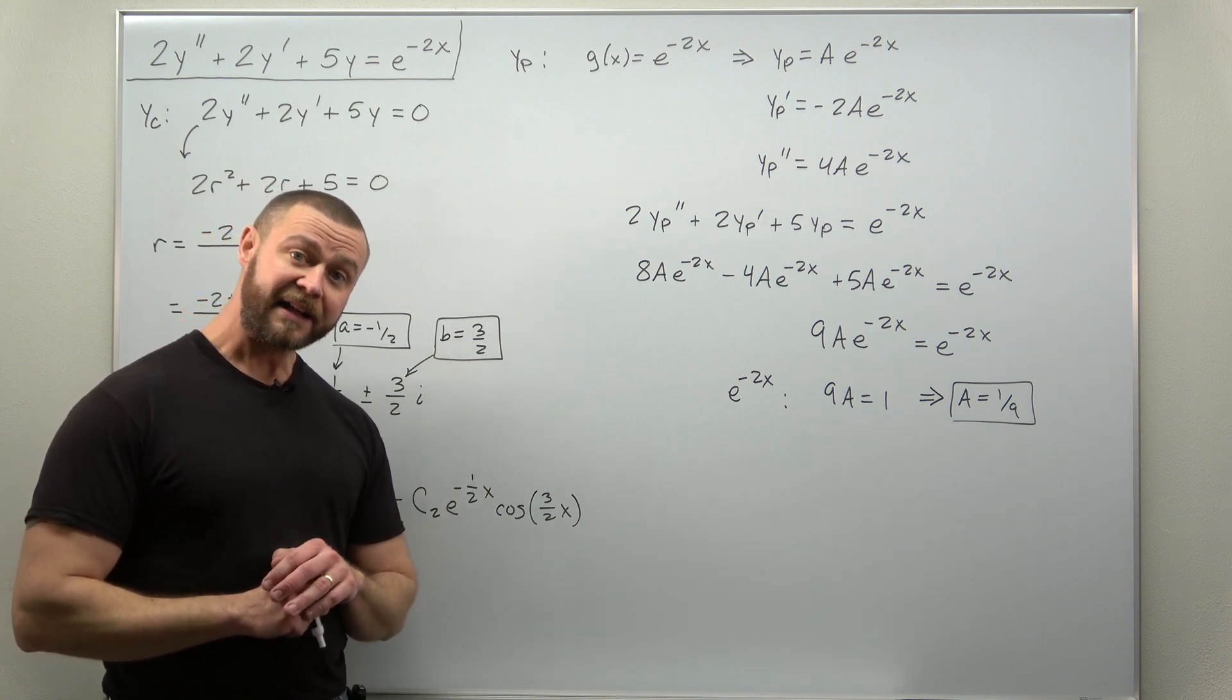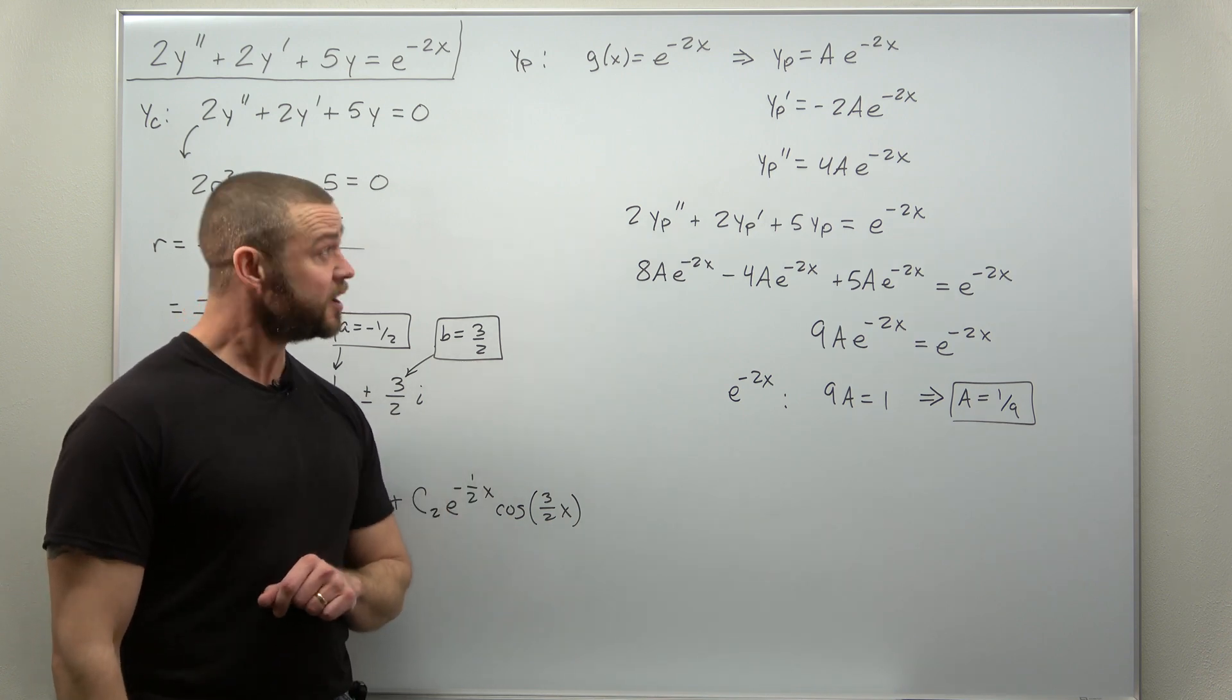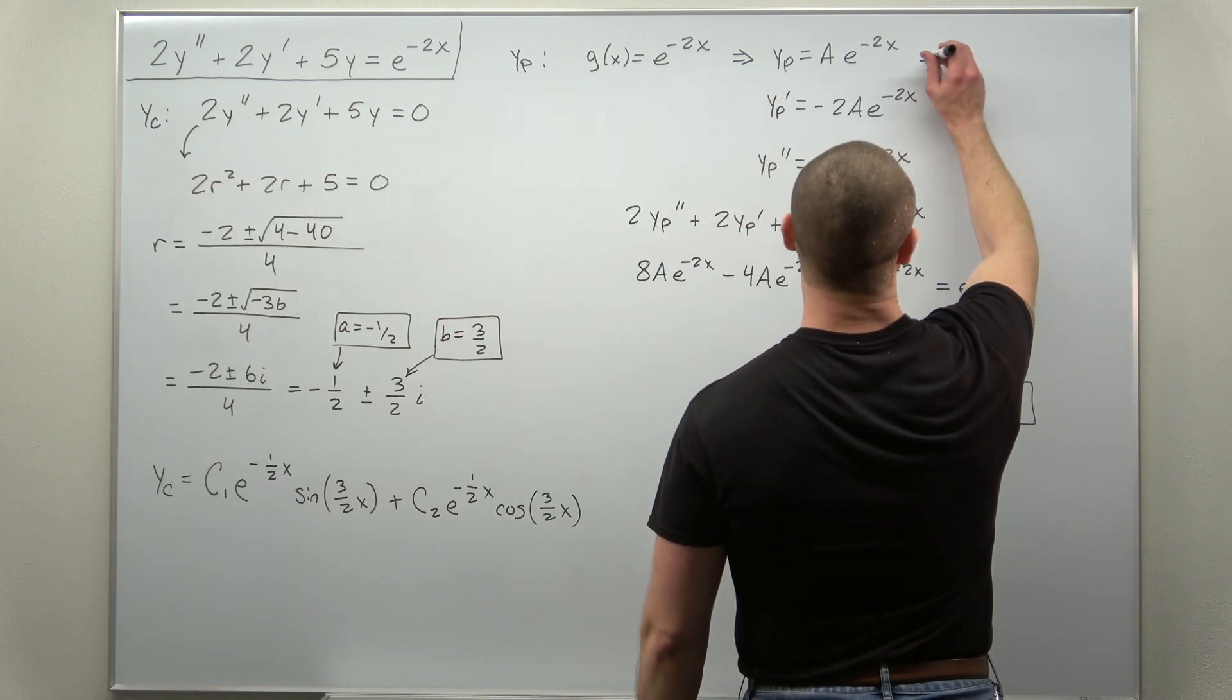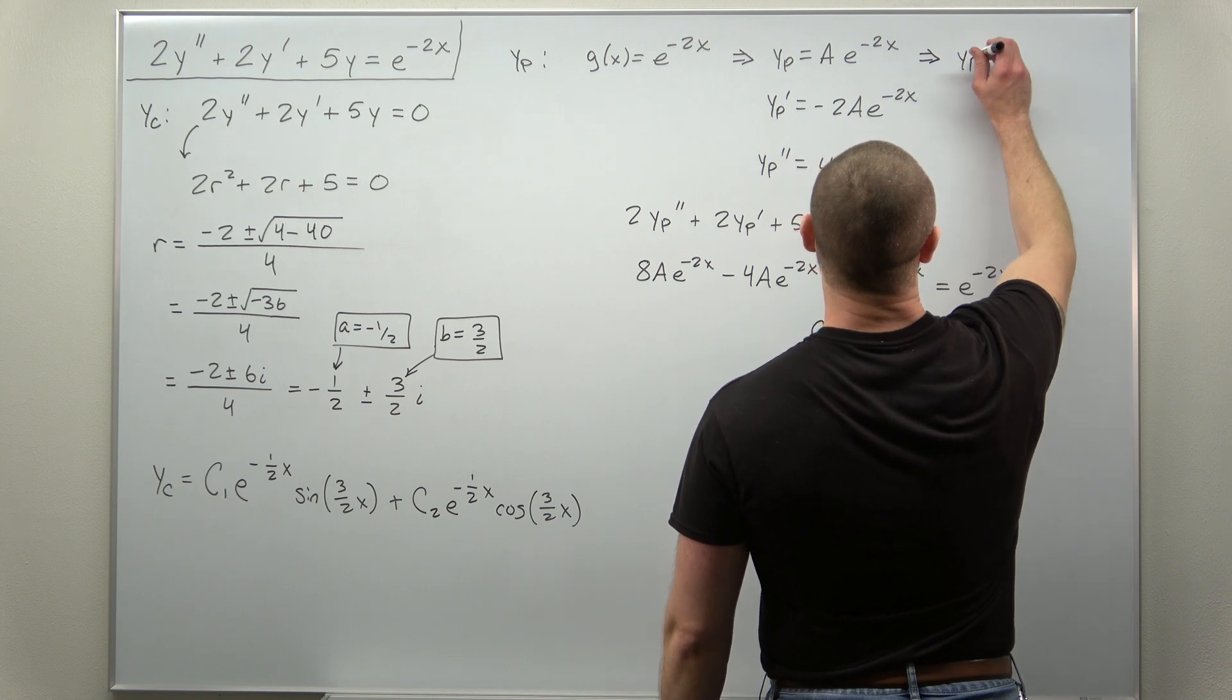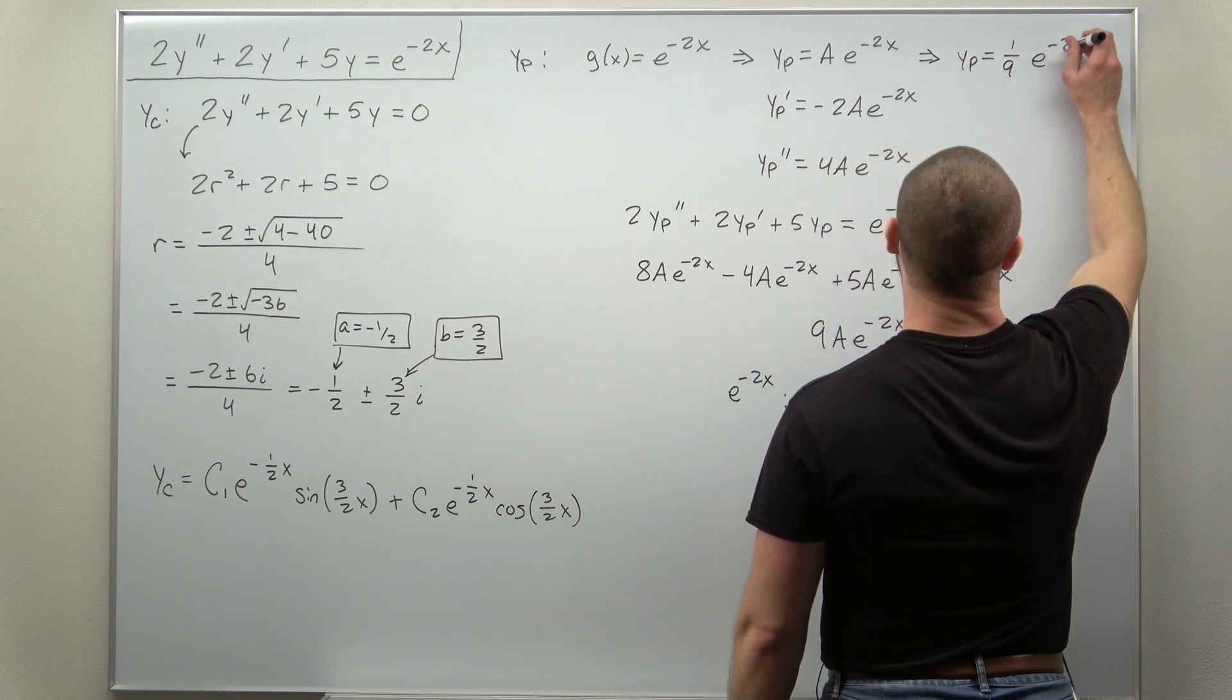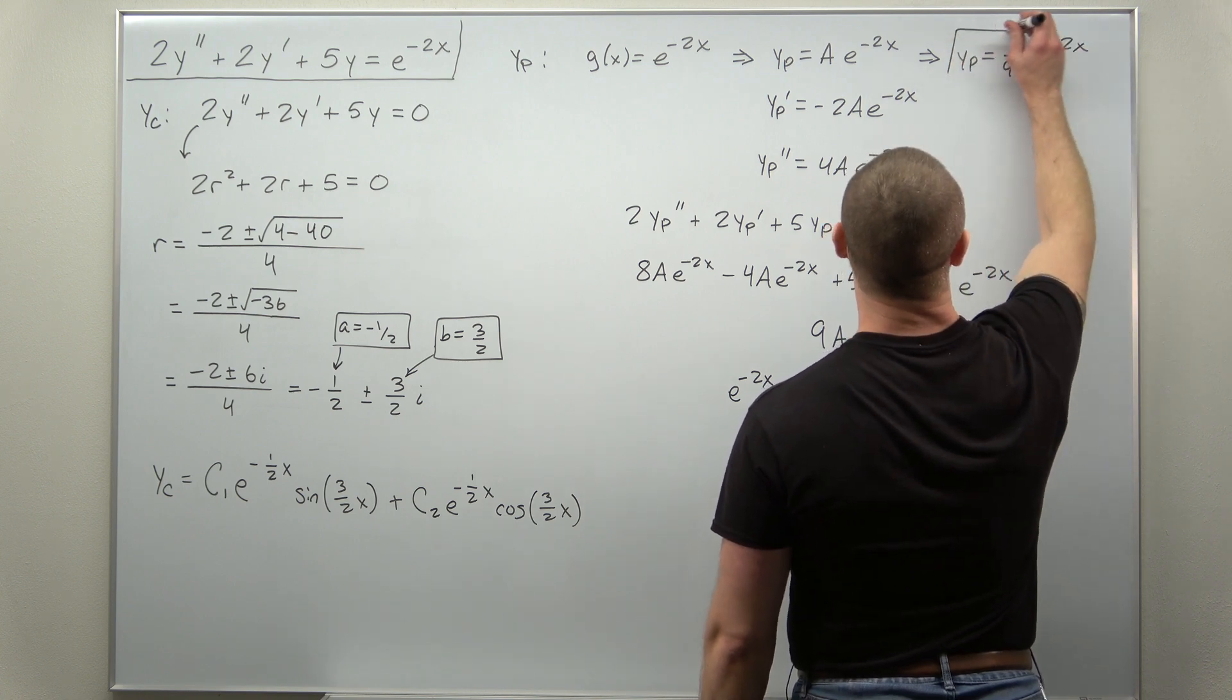And that's it for finding the particular solution. We can plug that back in up here. And we get as our particular solution, 1 over 9 times e to the negative 2x.